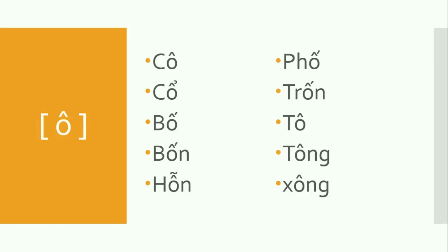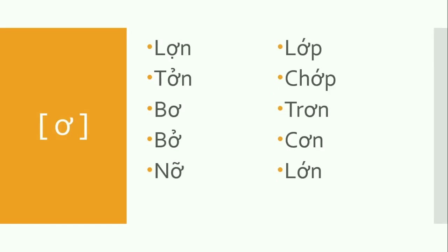The third one — Ơ — we pronounce like this: lỡn, tỏn, bơ, bỏ, nỡ, lớp, chớp, cơn, lớn.